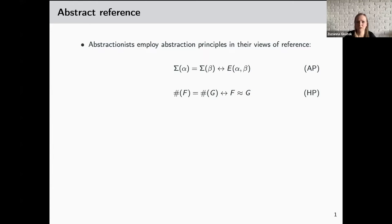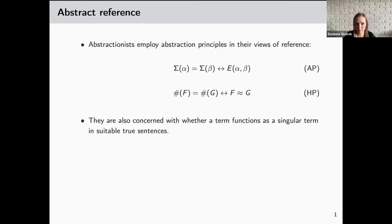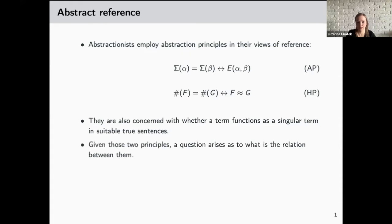This is not the only principle of abstract reference that they employ. They are also concerned with whether a term functions as a singular term in suitable true sentences. For example, they take it that you have a sentence such as 'two is a prime number,' which strikes us as obviously straightforwardly true, and because of that we are inclined to take the terms it involves, such as 'two,' to be referring. A question then arises as to what is the relation between those two principles.